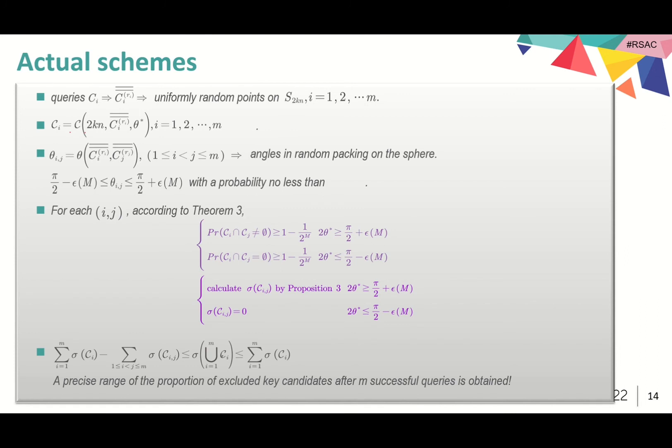Suppose that the attacker is making m queries. We only consider one cap for each query, which is denoted by calligraphic letter c_i. The rotations of queries can be regarded as m uniform random points on S_{2kn} after normalization. For two queries, the angle between them is denoted by theta_{ij} and can be regarded as an angle in random packing on the sphere.